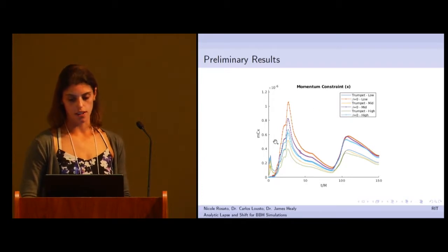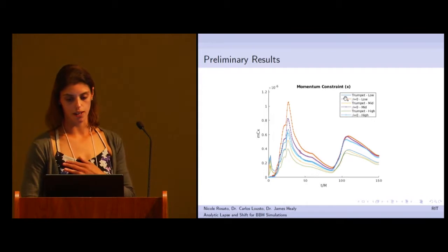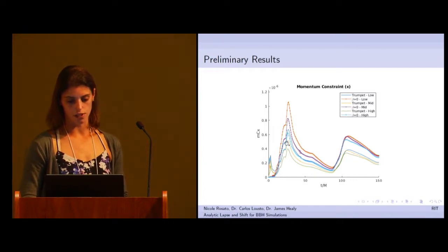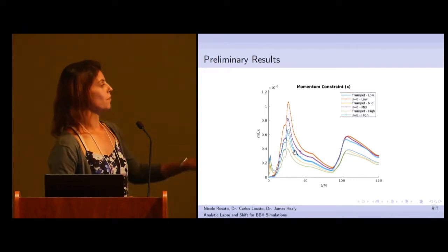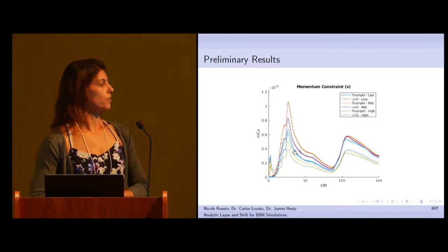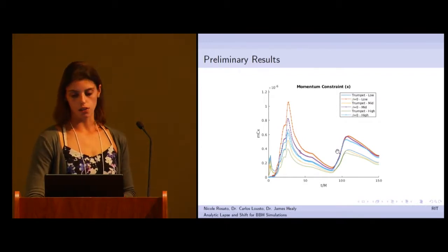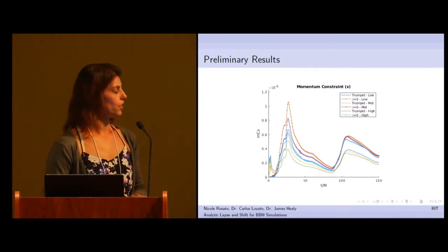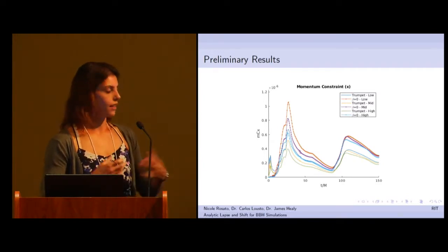I'll show you just one component of the momentum constraint because they all basically look like this. Again, I want you to look specifically at the blue lines. The trumpet initial data is here and the original initial data is here. You can follow the trumpet initial data and see that it matches the high resolution original initial data. So you're gaining over a factor of two in effective resolution just by changing the initial data.